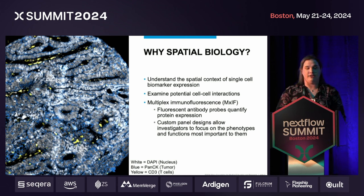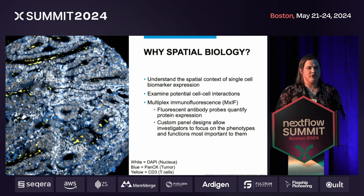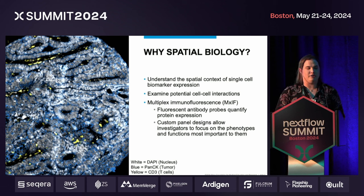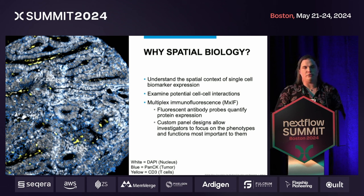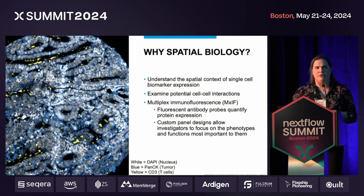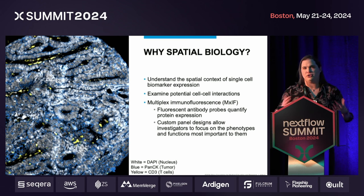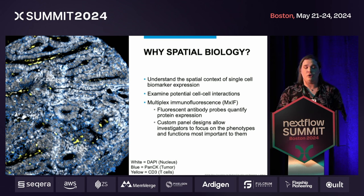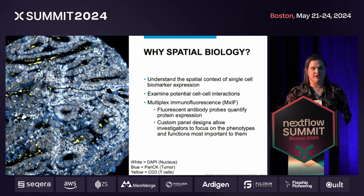Here is an example of an MXIF image with three of the probes shown: white is the nuclear marker, blue is a tumor marker, and yellow is a T cell marker. In this instance, we might be looking into how immune cells can infiltrate into tumors, hopefully interacting with and killing those tumor cells so that we can have better outcomes for patients. That's just one application of many.